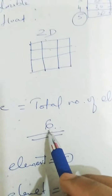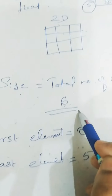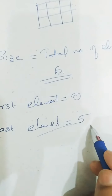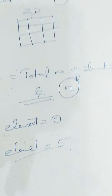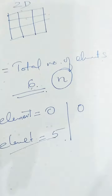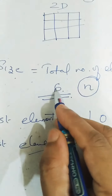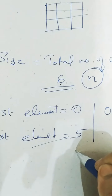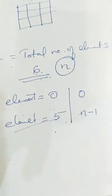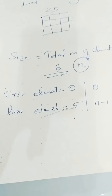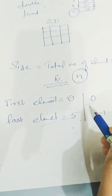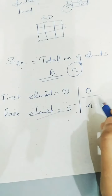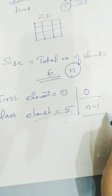When the total number of elements, that is the size, is 6, the last element will be at position 5. So what happens when the size is n? The first element will be at position 0 — it will always be the same. And the last element will be at position n minus 1.